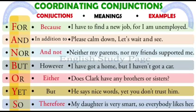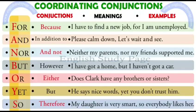Let's study these examples. For 'for': 'I have to find a new job, for I am unemployed.' For 'nor': 'Neither my parents nor my friends supported me.' For 'but': 'I have got a home, but I haven't got a car.' For 'yet': 'He says nice words, yet you don't trust him.' Finally, for 'so': 'My daughter is very smart, so everybody likes her.'